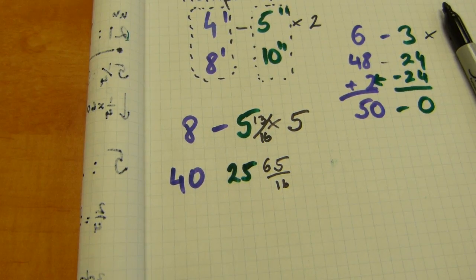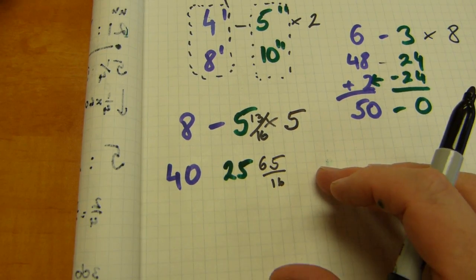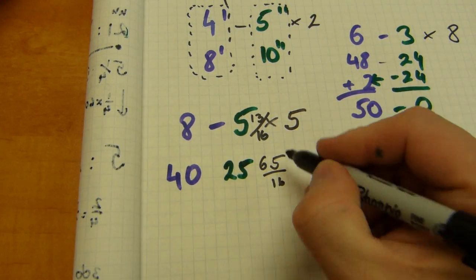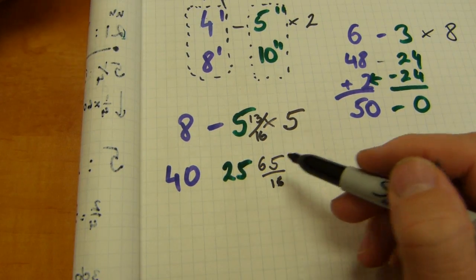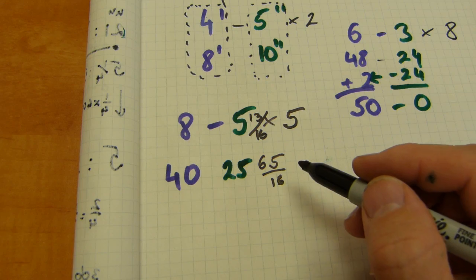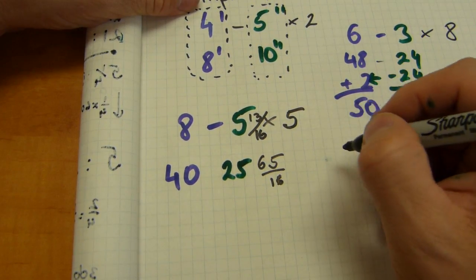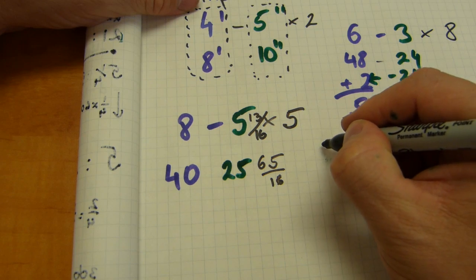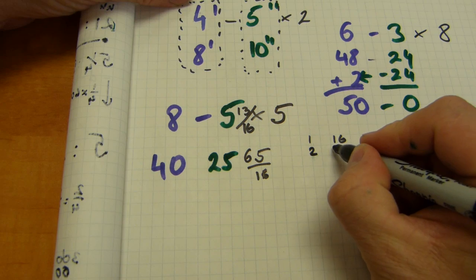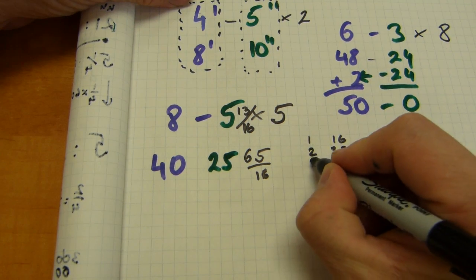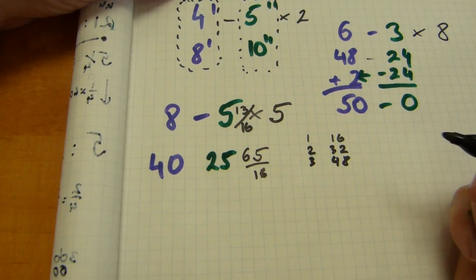So now the carrying over begins. 65/16ths is more than 16/16ths. 16/16ths makes one whole inch, so this is clearly more than that. In proper fraction form we're gonna have to make a mixed number out of it. For that let me just write up multiples of 16 here. 1 by 16 is 16. 2 by 16 of course is 32. 3 by 16 is 48.